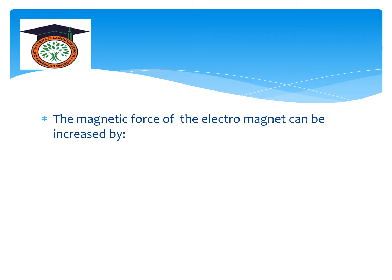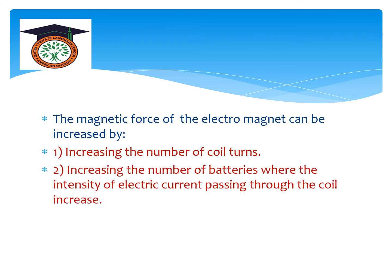The magnetic force of an electromagnet can be increased by two ways: number one, increasing the number of coil turns — when increasing the number of coil turns, the electromagnet becomes stronger and can attract more magnetic materials. Number two, increasing the number of batteries, which increases the intensity of electric current passing through the coil, making the soft iron nail a stronger magnet.